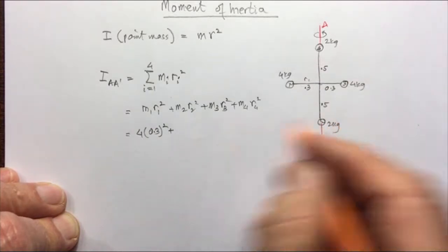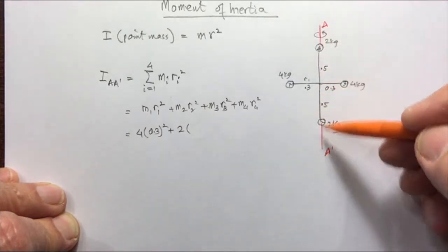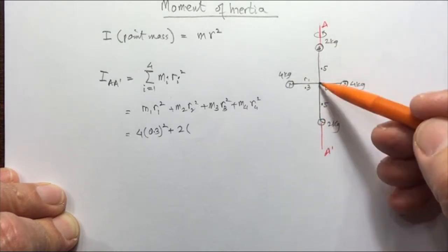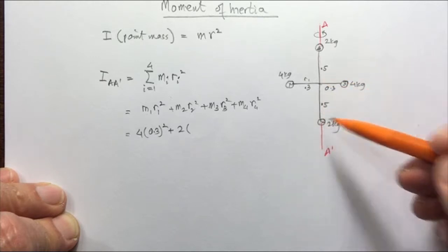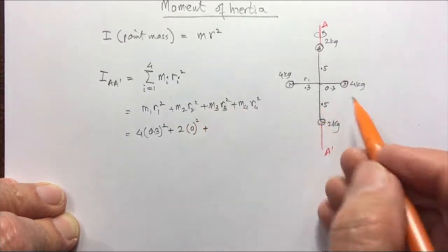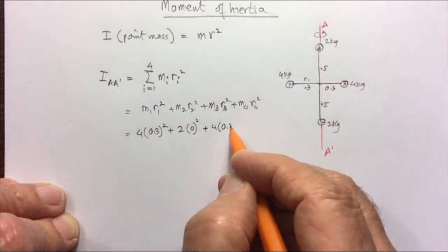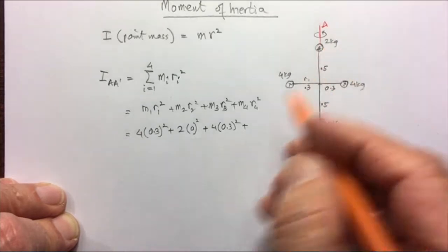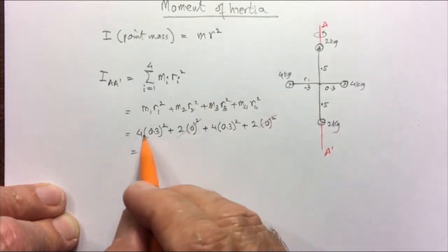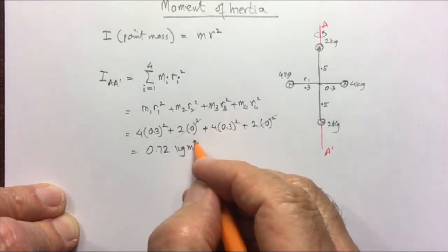M2 is 2 kilograms, but its distance from the axis is 0 because the mass sits right on the axis, so it contributes no moment of inertia. M3 is 4 kilograms at 0.3 meters, and M4 is right on the axis so it's also 0. Those two terms are zero, and when we solve this we get 0.72 kilogram meters squared — that's the moment of inertia about this axis.